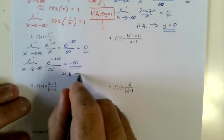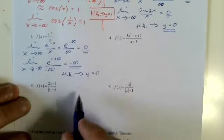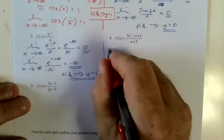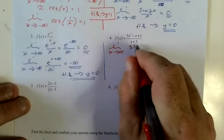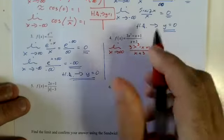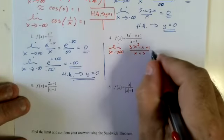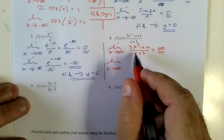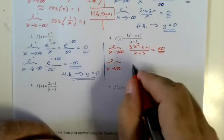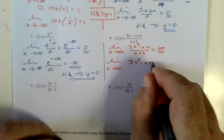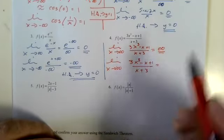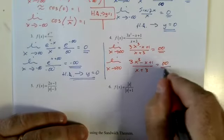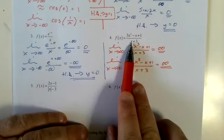The horizontal asymptote is at zero — that's an asymptote. For a polynomial case, this is going to go to 3x squared. Plugging in zero we basically get infinity, and for negative infinity it's still positive because it's squared, so it goes to positive infinity.